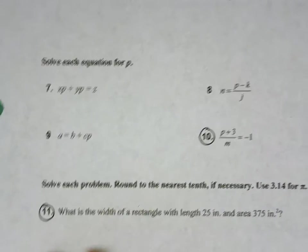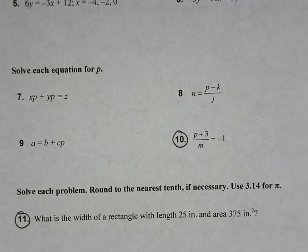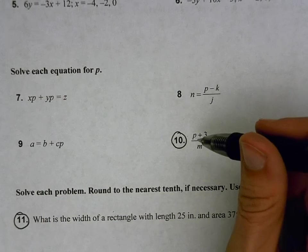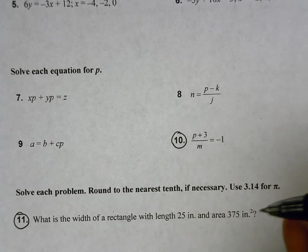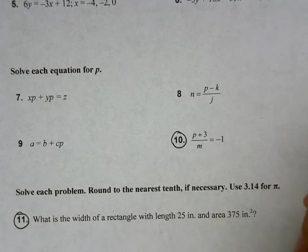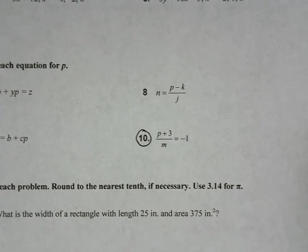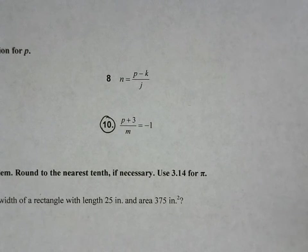The next section was solving for p. So this is number 7 through 10, I went ahead and picked number 10. For number 10, we are looking to isolate p, get it all by itself. And currently, p has a plus 3 attached, a divided by m attached. So we're going to need to undo both of those. And there's a couple of different ways you can solve this problem. The way we chose to solve it is to split the fraction first.